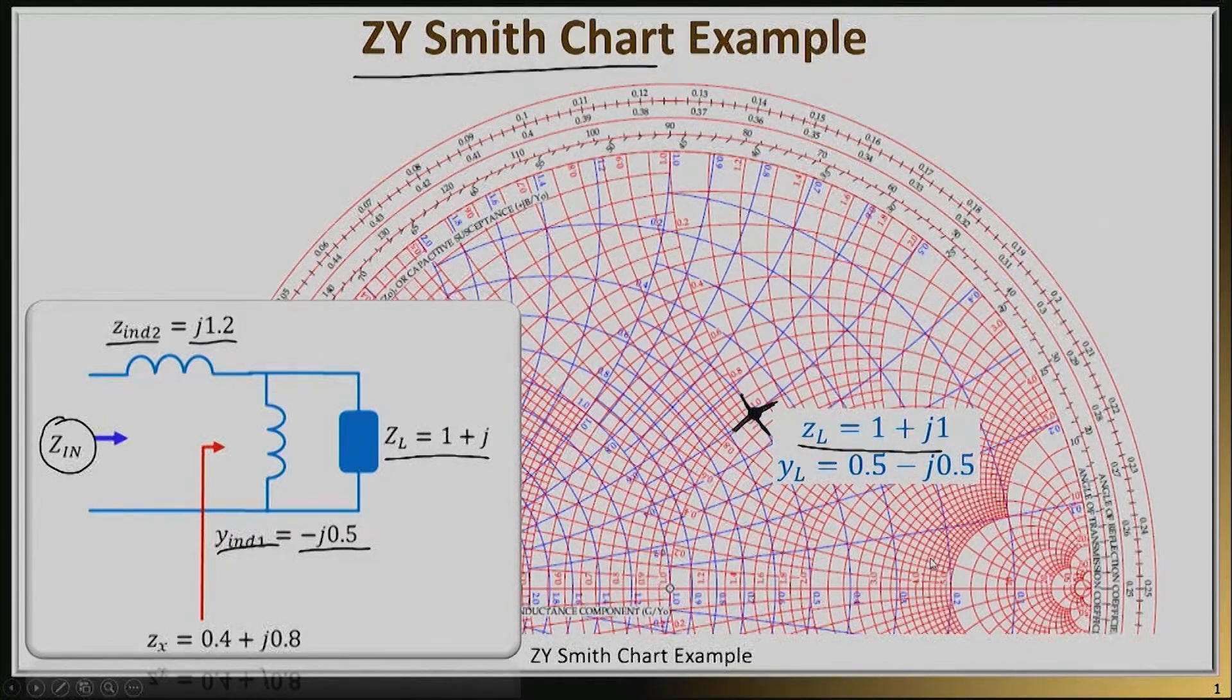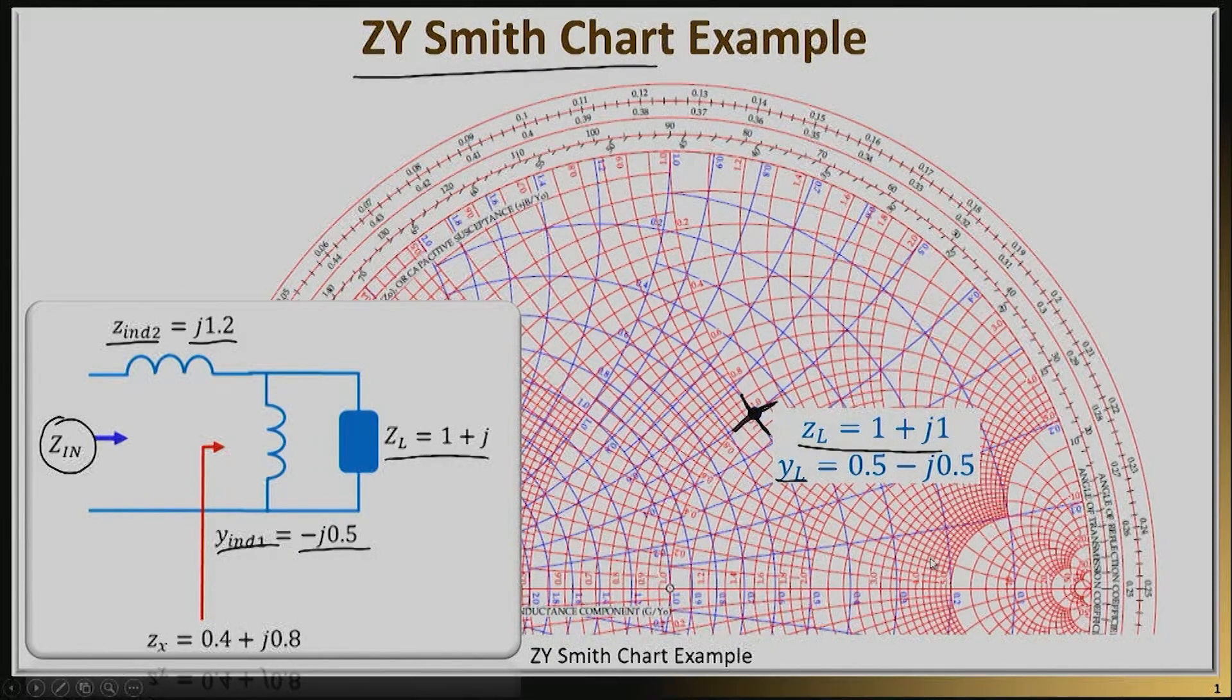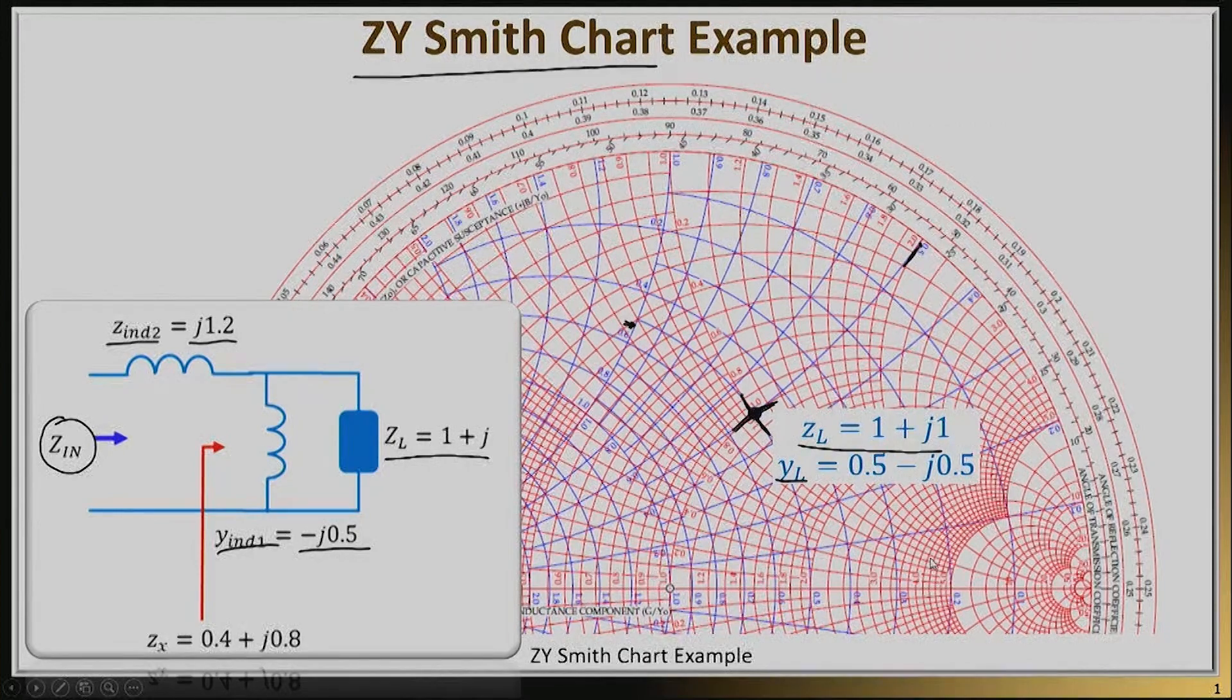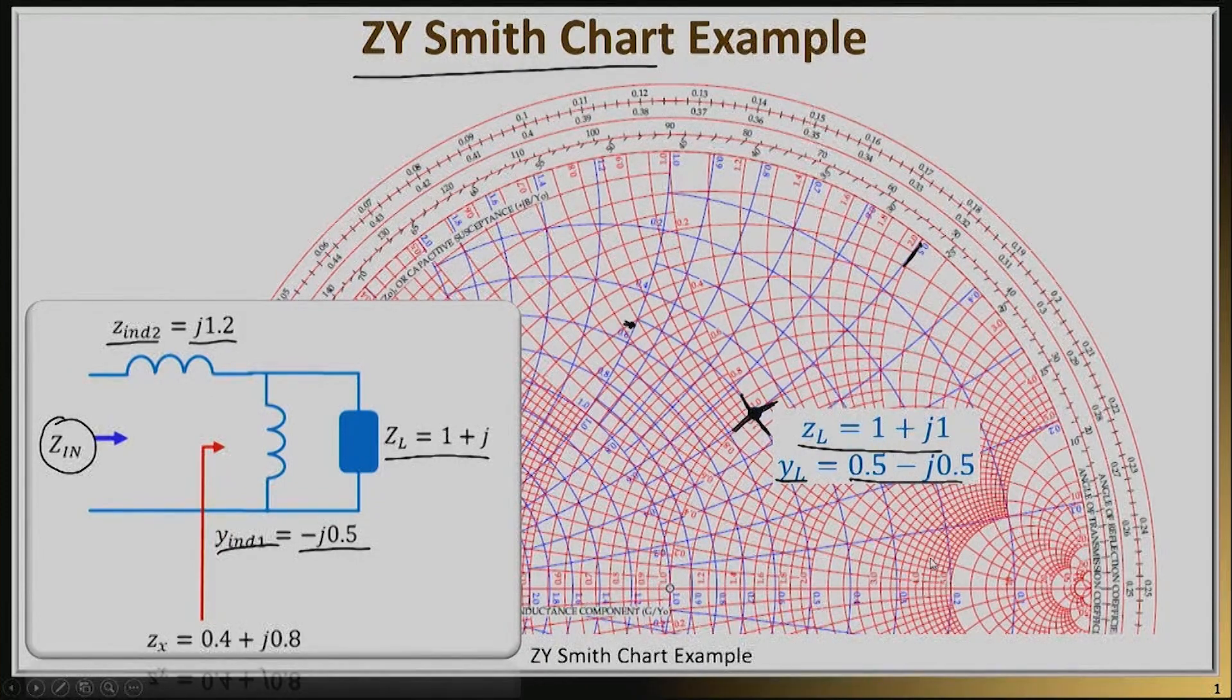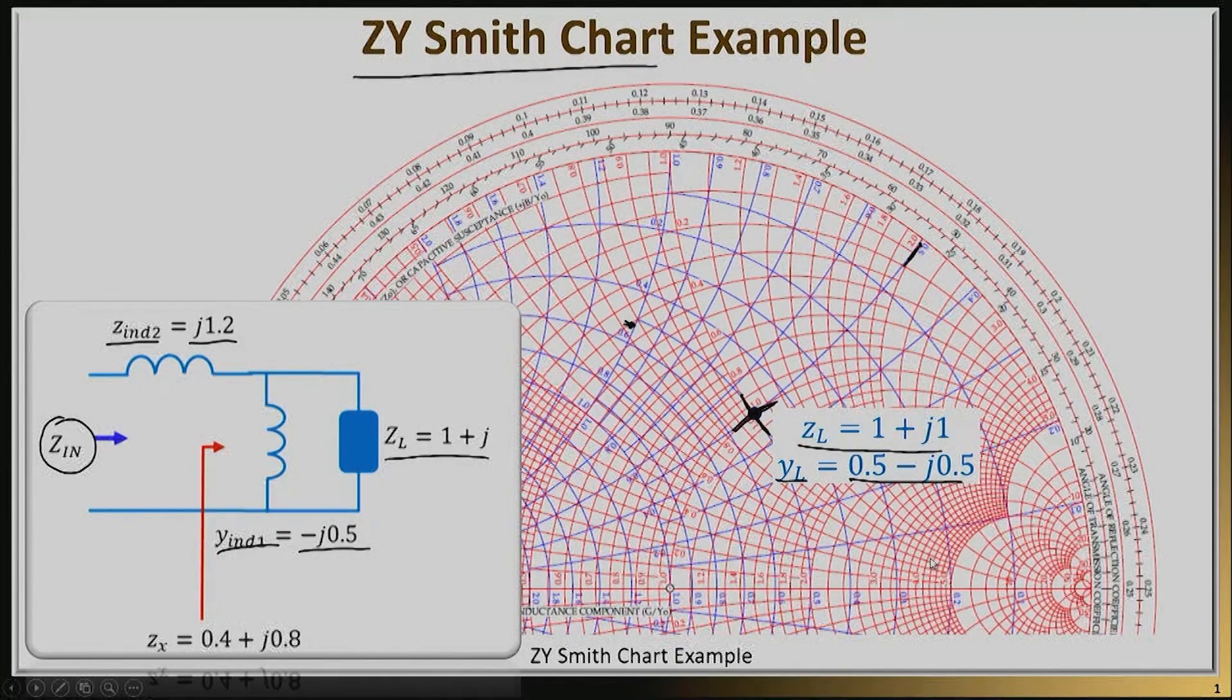The beauty of this double Smith chart is you can now read the YL, the admittance of this load as well. Using the blue circles, I find the real part is 0.5, and then this circle whose value is 0.5. I'm reading the Y Smith chart on the upper half, so my value is 0.5 minus j0.5. You don't have to make rotations—just put the load down, look at red circles to read impedance and blue circles to read admittance.